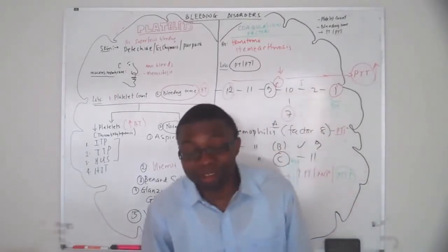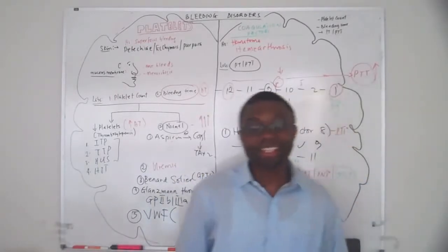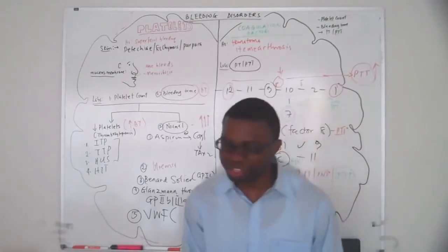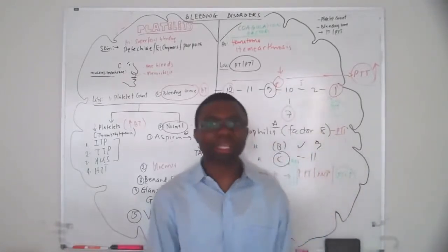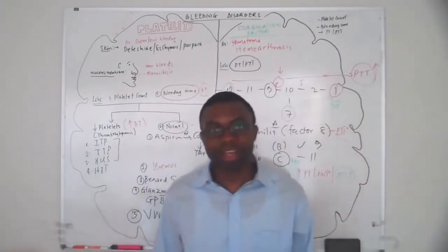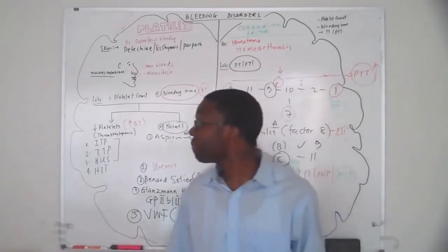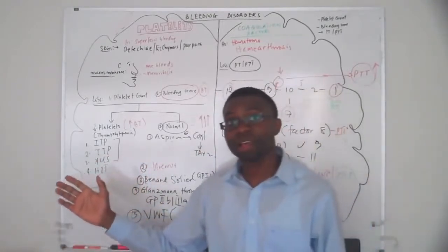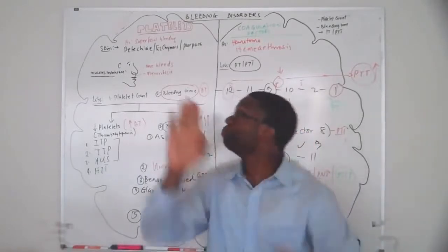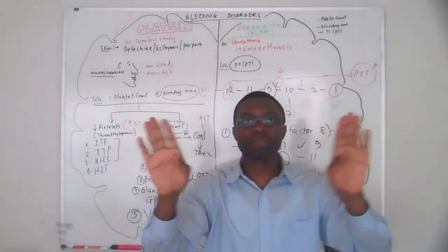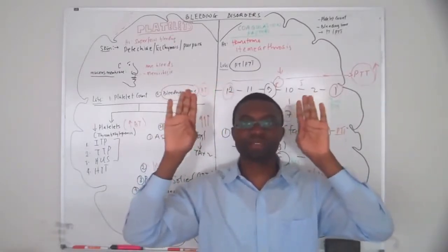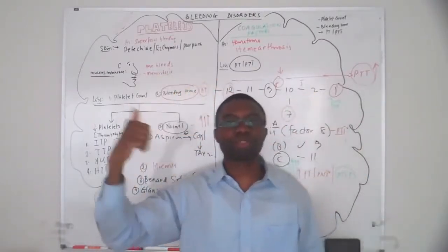This brings us to the end of the lecture. This is how hematologists think — they make medical students and nursing students look like idiots, but this is how they think. Summary: bleeding disorders — split into platelets and coagulation factors, two sides of your brain. Platelet problems present superficially.